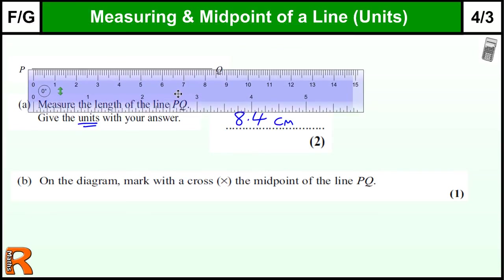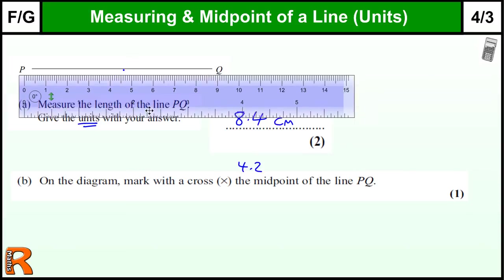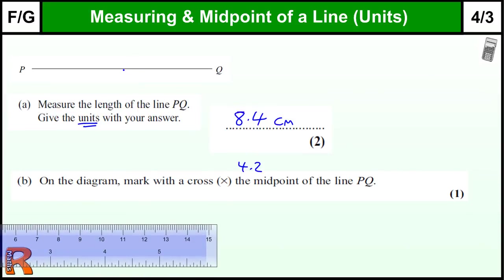The next part of the question is to mark on the midpoint. So if we know it's 8.4 centimeters long we should know that halfway is half of that which is going to be 4.2 or 42 millimeters. If we carefully go across till we start from the zero, make sure it's on the line and put our little mark there on 4.2, and we have to put a cross to mark the midpoint. So make sure we do that.